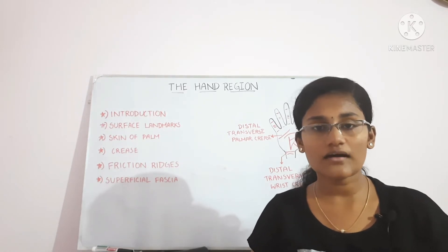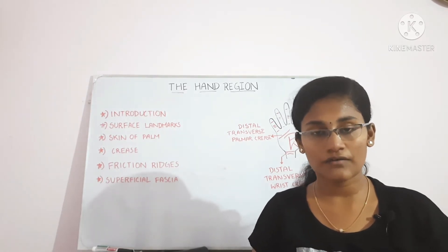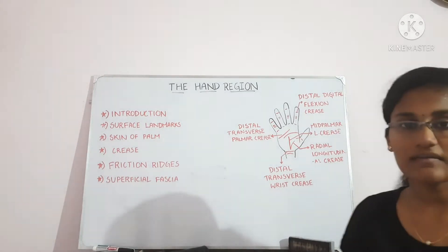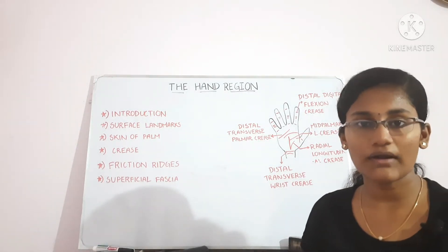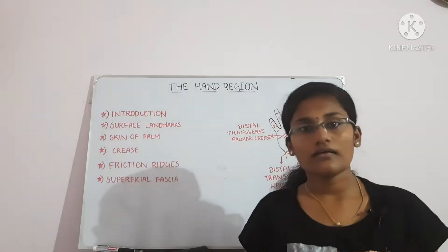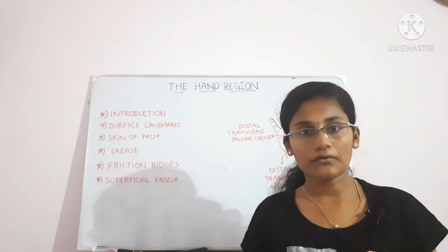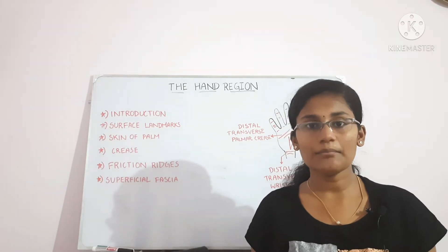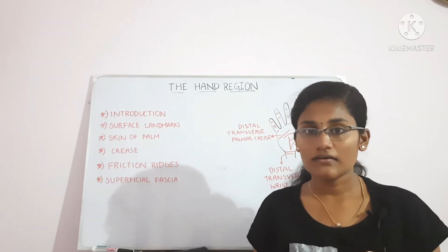Next comes the tubercle of trapezium. The tubercle of trapezium is present distolaterally to the scaphoid, and as already mentioned, it can only be felt by deep palpation.